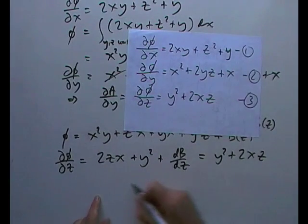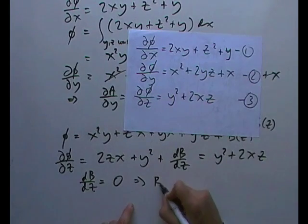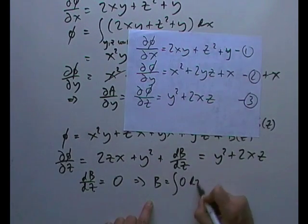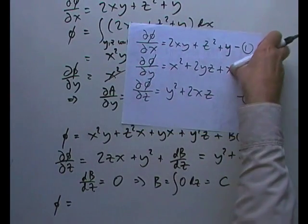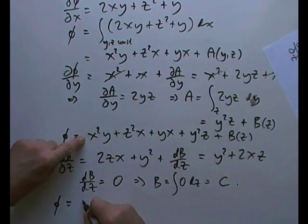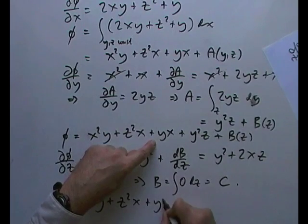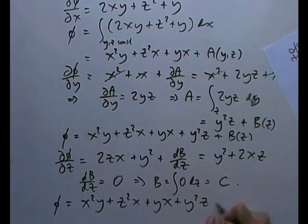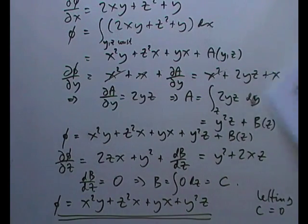Now these terms all cancel out, meaning that db by dz must equal 0. So that means that b must be the integral of 0 dz, which is just a constant. Finally give me the function. So the function is going to be, back to the original one here, x squared y plus z squared x plus yx plus y squared z plus some constant, but letting c equal 0, since it's just find any particular potential for it, then c equals to 0 means this will do. So there is. There's my potential function.